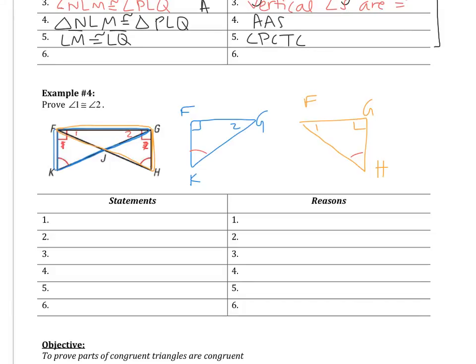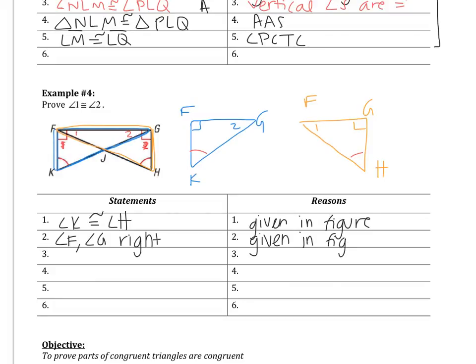Let's write down the givens. Angle K is congruent to angle H — given in the figure. Angles F and G are right angles — given in the figure. It may help to redraw the triangles: triangle KGF has angle 2 and a right angle, and triangle FGH has angle 1 and a right angle.